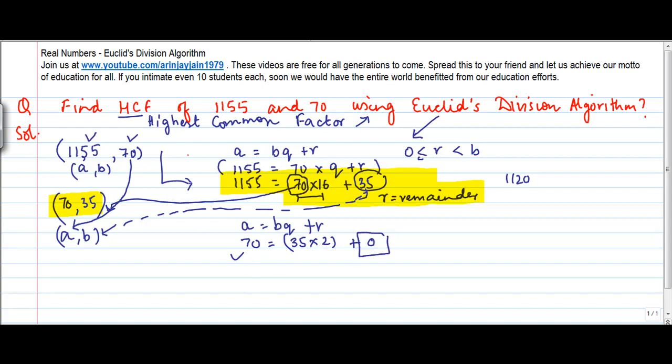Now this step has to be repeated till the time your r becomes 0. Once your r becomes 0, you need to see what is the value of b here. b equals 35, and whatever is the value of b basically becomes your Highest Common Factor.